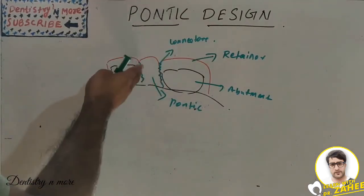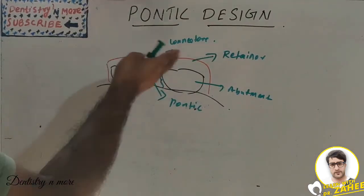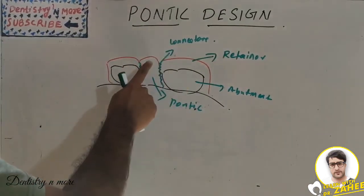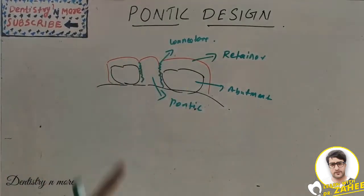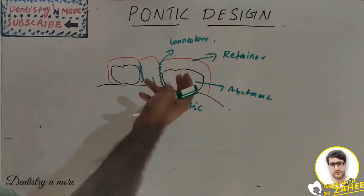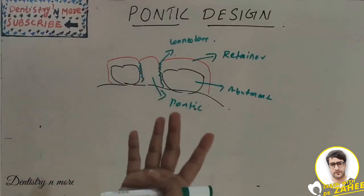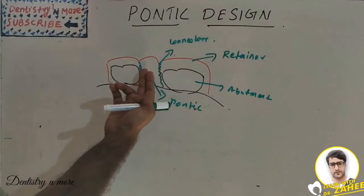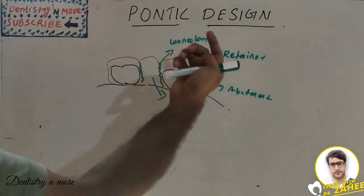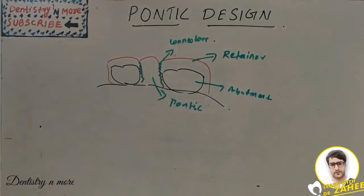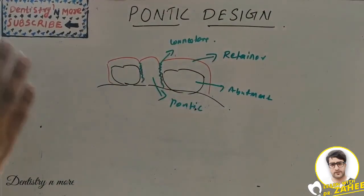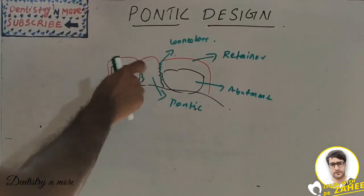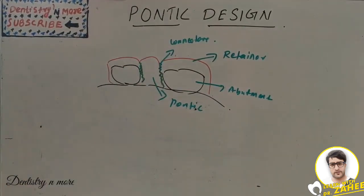We have a retainer on either side. There is also something known as a connector, which connects the pontic and retainer. Abutments are natural teeth or RCT-treated teeth adjacent to the edentulous space that receive the retainers. These are the four components of a fixed partial denture. Today we are going to learn about the pontic in detail.